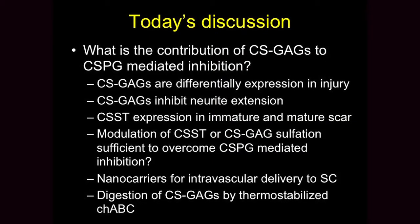After injury, if you look at the sugars present in normal brain versus injured CNS, the profile of sugars in terms of their sulfation patterns changes. The ones that go up are the ones that are particularly inhibitory to growth cones.